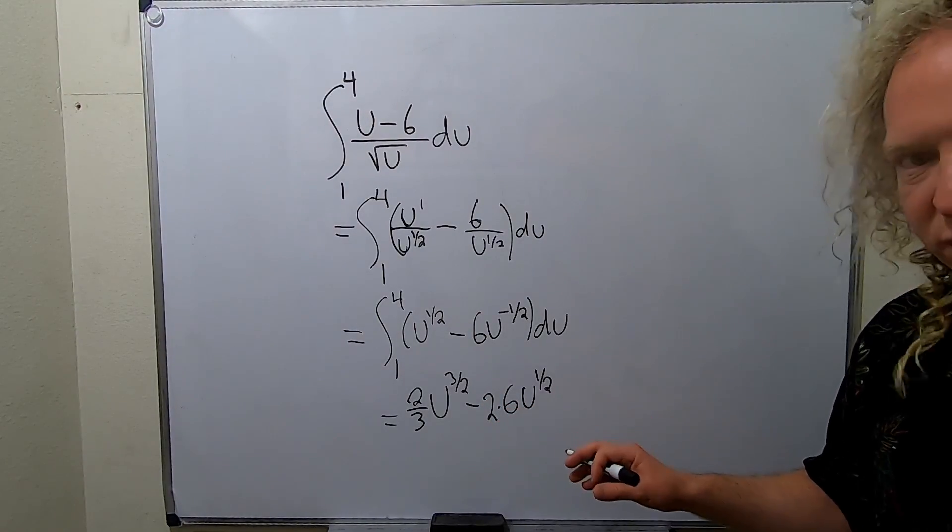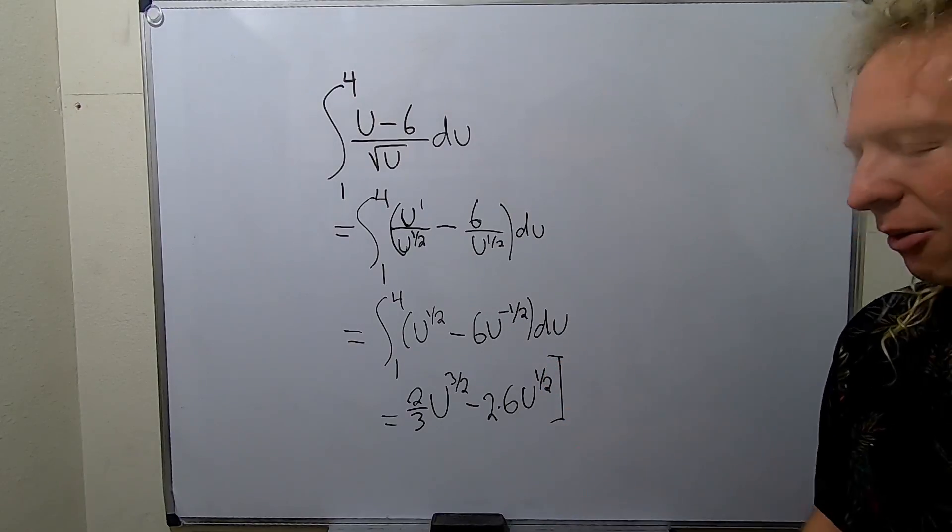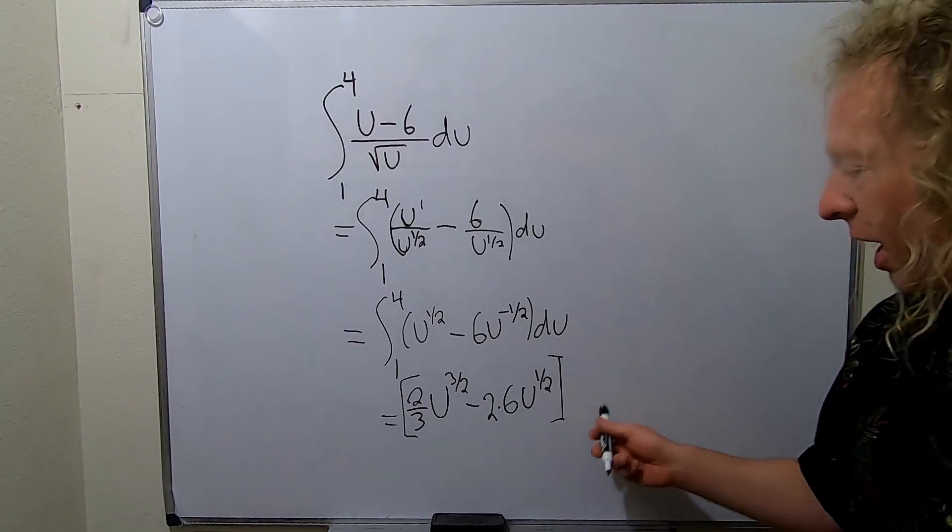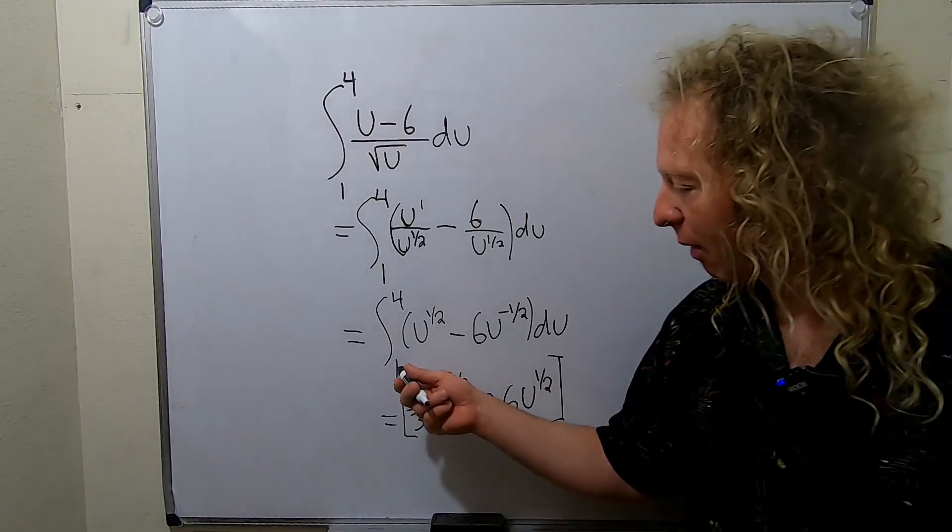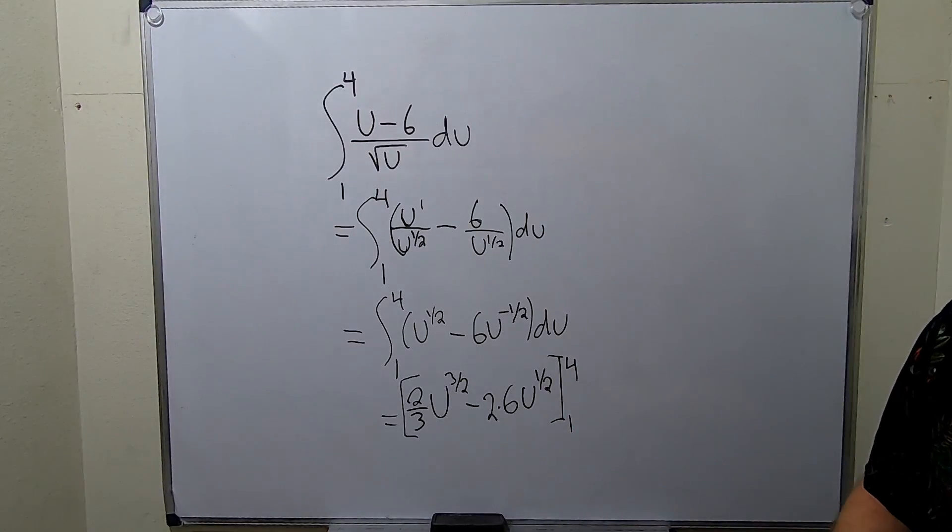You have three choices here. You can put a line, a bracket, or go all out and do two brackets. It just depends what you're comfortable with. So line, bracket, or two brackets. We're going from 1 to 4, so then you put these numbers here. These are called the limits of integration.